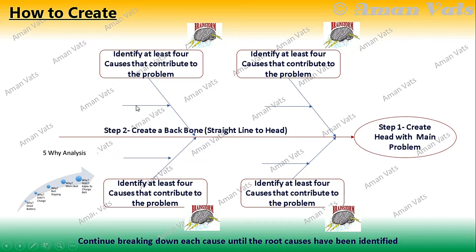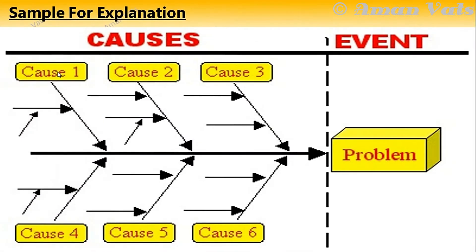If there are additional inputs pertaining to a factor, just keep writing them there — it is a continuous process of breaking down each cause until the root causes of all parameters have been identified. As a sample, you can have cause one, cause two, cause three, cause four, cause five, cause six — for example: people, environment, and so on — which all lead to the main problem.